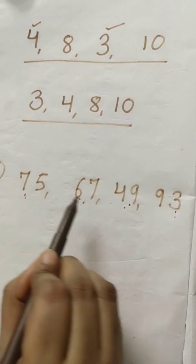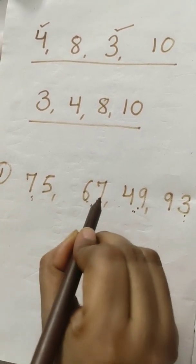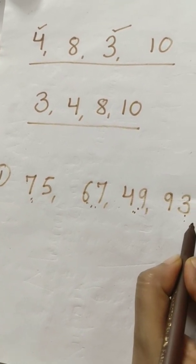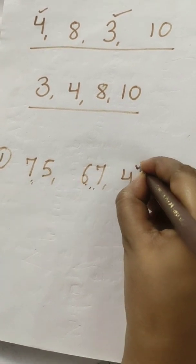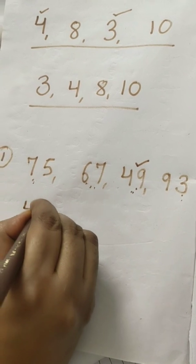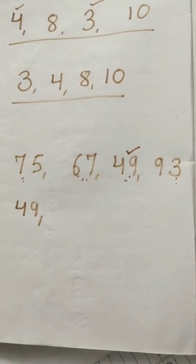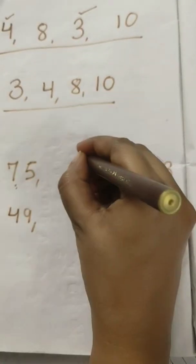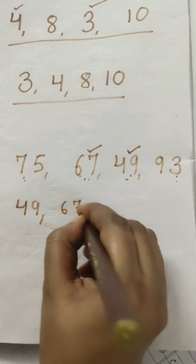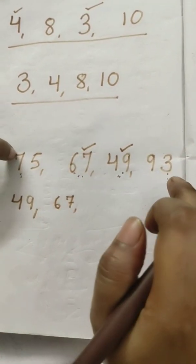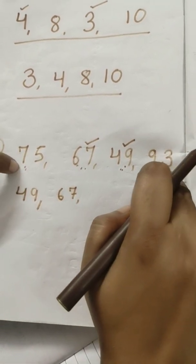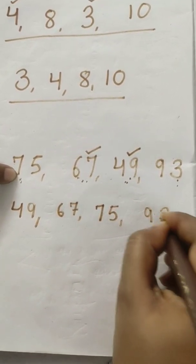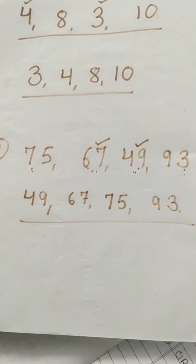Which one is the smallest among 75, 67, 49, and 93? My children, you are right — 49 is the smallest. So ma'am is going to write 49 first. Then among 75, 67, and 93, find the next smallest. Peta, you are right — 67. Then 75 and 93 are left; 75 is the smaller one. So we write 75, then 93. Got it, children?